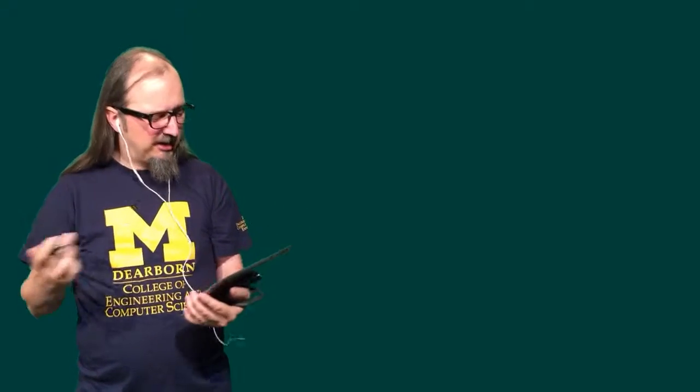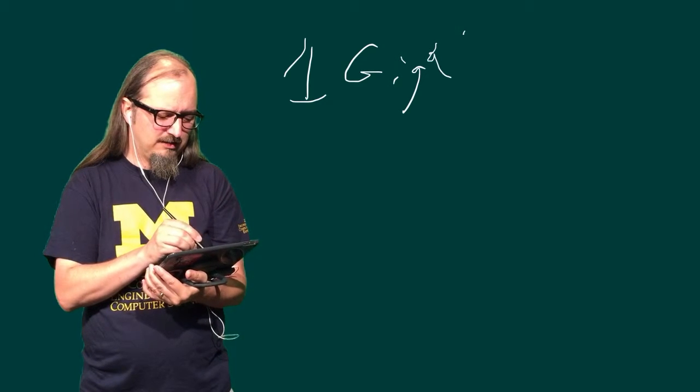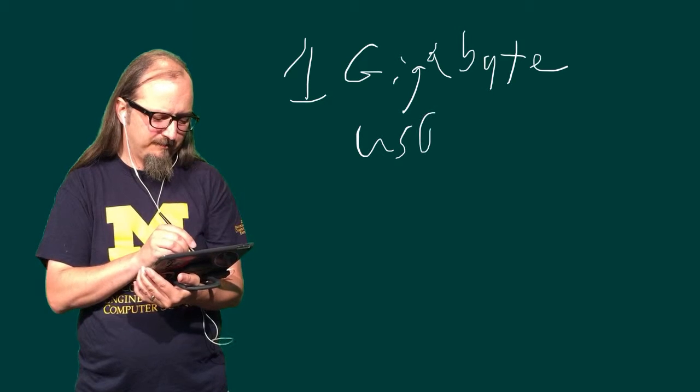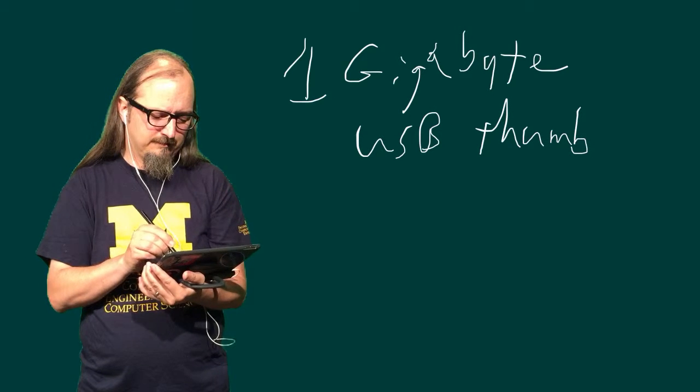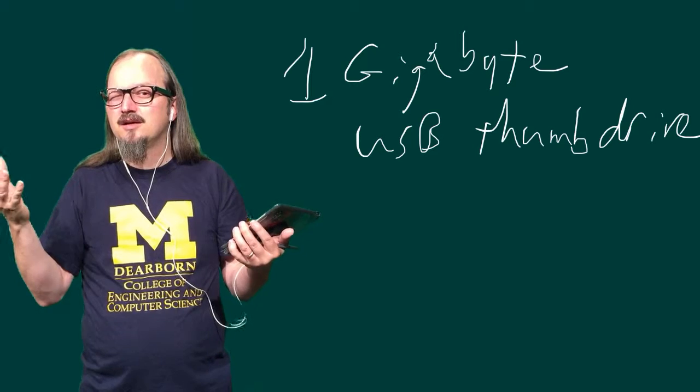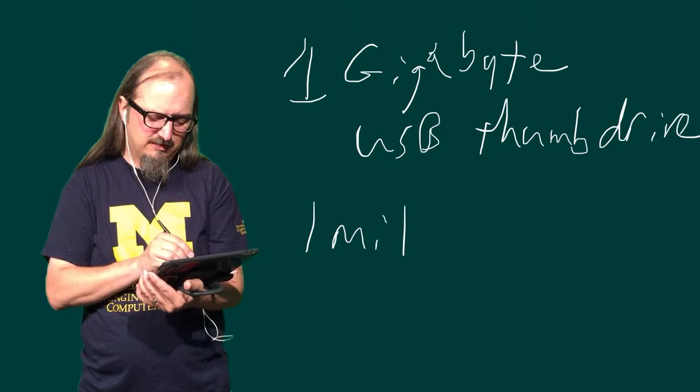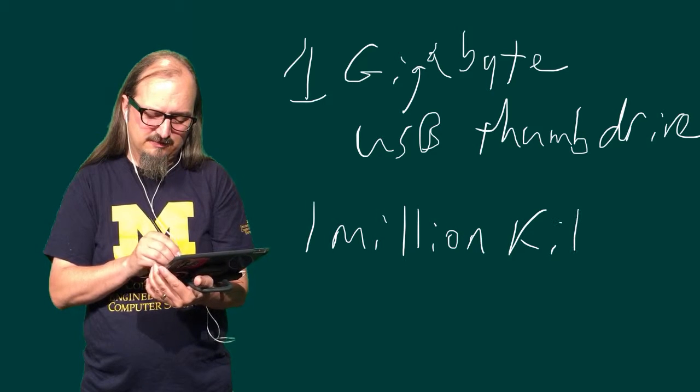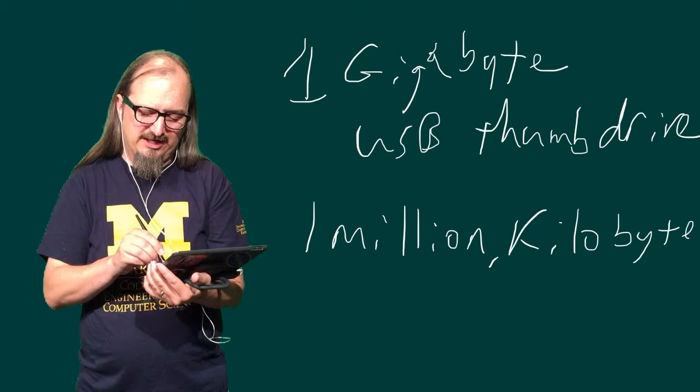Now this becomes important because when you buy stuff, you've got to look at how it's marked. Even three to five years ago, things were very poorly marked. Today they're getting better. Because when we talk about a kilobyte, if I'm trying to sell it to you, I might tell you I'm going to sell you a one gigabyte USB drive. Well, one gigabyte would be what? A billion bytes, or one million kilobytes, is what a gigabyte is.